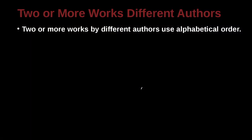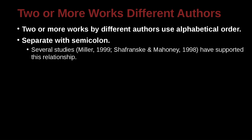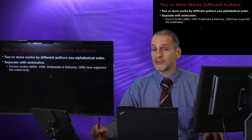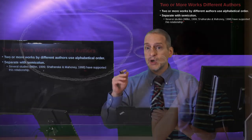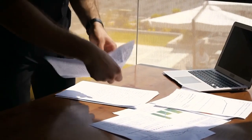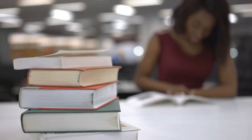When you have two or more works by different authors, we're going to use alphabetical order separated by a semicolon. This is super common — several studies have supported this relationship. This is probably one of the most common uses of in-line citation: you have an idea, and this idea has multiple papers you've drawn from, multiple papers and books.